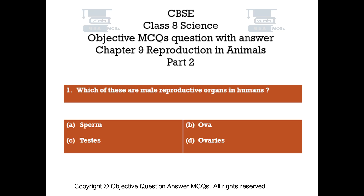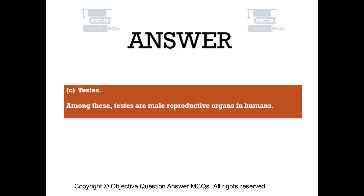Question number 1. Which of these are male reproductive organs in humans? Option A: Sperm. Option B: Ova. Option C: Testes. Option D: Ovaries. The right answer is Option C: Testes. Among these, testes are male reproductive organs in humans.